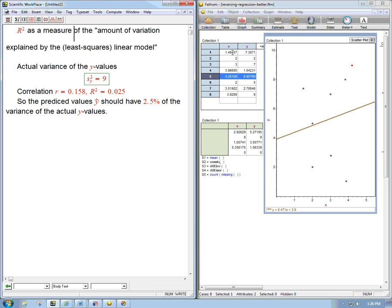So what I've got over here in Fathom is eight X values and eight Y values, and they're plotted here. And I've got the least-squares line. So here's the least-squares regression line. And I want to show you what it means to say that this model explains a certain amount of the variation of this data.